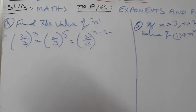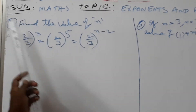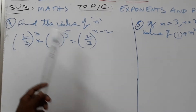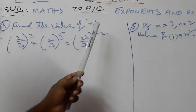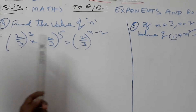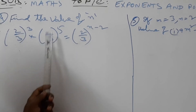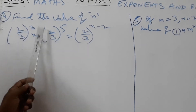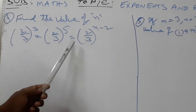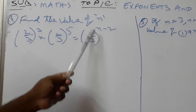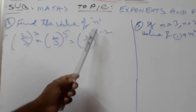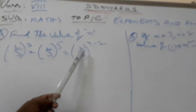Today, another problem. Find the value of n. (2/3) whole cube into (2/3) whole to the power of 5, is equal to (2/3) whole to the power of n minus 2.